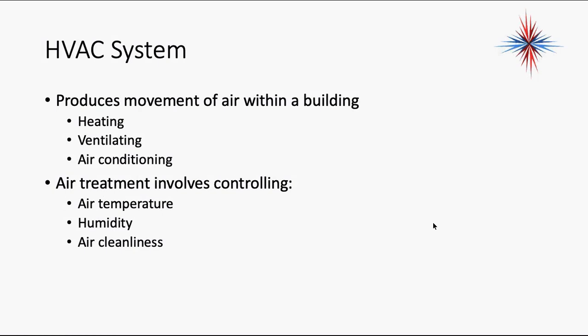The HVAC system is designed to provide the movement of air within a building — basically moving air. We're either heating that air, ventilating, or air conditioning. Air treatment involves controlling air temperature, humidity, and air cleanliness. That's why we did all the leading-up work: the humidity conversation, filters, and comfort temperatures — before getting into the design. It makes it easier to understand the whole picture.